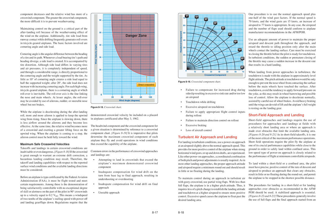For landing in turbulent conditions, use a power-on approach at an airspeed slightly above the normal approach speed. This provides for more positive control of the airplane when strong horizontal wind gusts or up-and-down drafts are experienced. Like other power-on approaches, a coordinated combination of both pitch and power adjustments is usually required. The proper approach attitude and airspeed require a minimum roundout and should result in little or no floating during the landing.